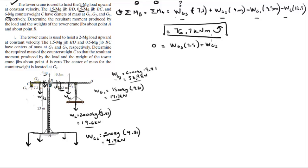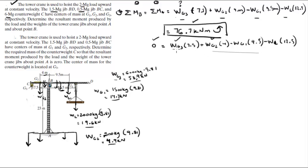— plus wg2 times 4, minus wg1 times 9.5, minus wl (the weight of the load) times 12.5. Everything else remains the same except wg3. Solving for wg3, you get that wg3 equals 48.67 kilonewtons.